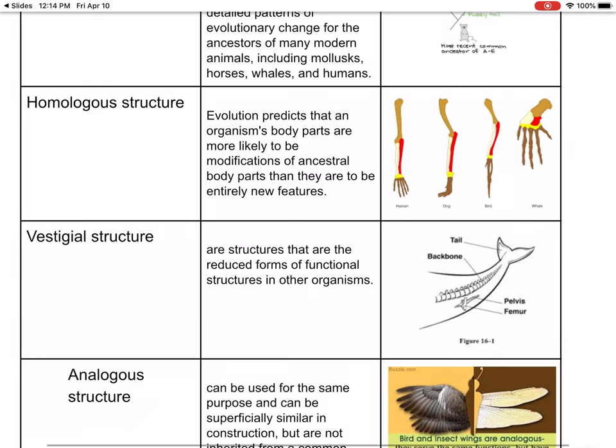Homologous structures are when an organism's body parts are more likely to be changed or modified from their ancestors' body parts — they're not entirely new features, they're just changing over time.